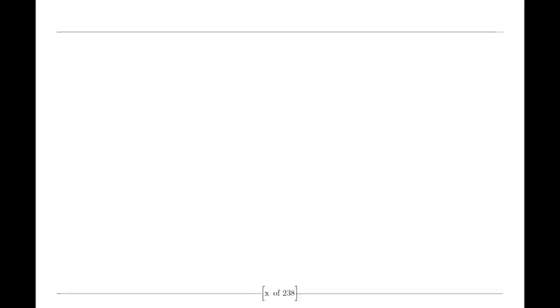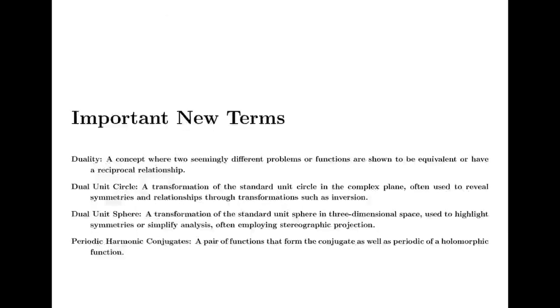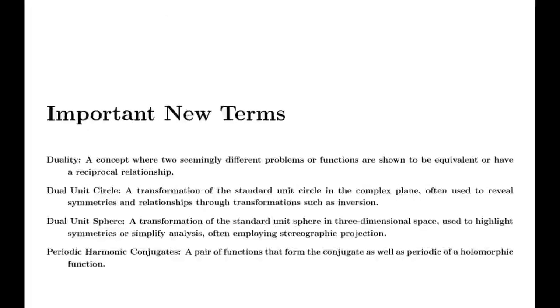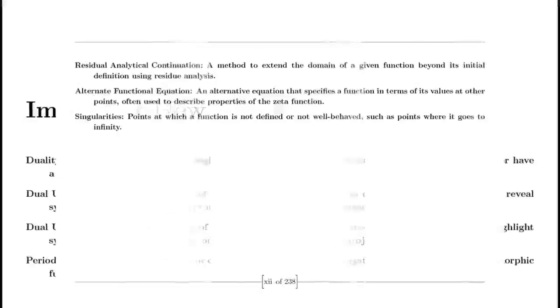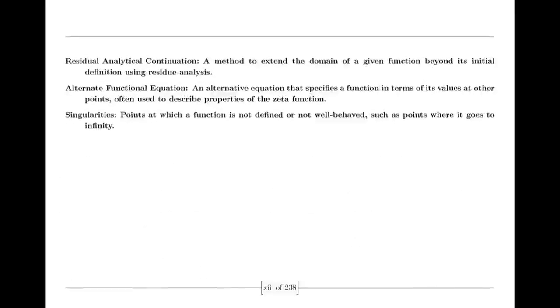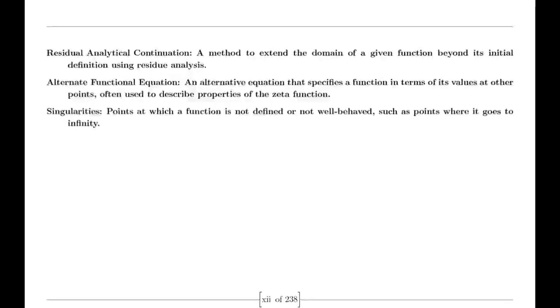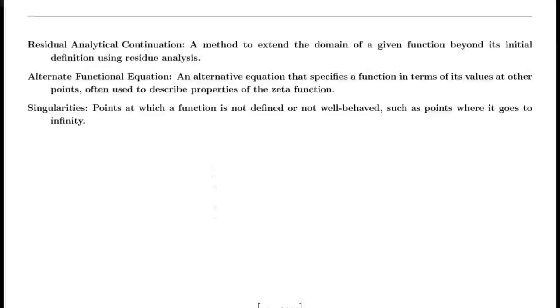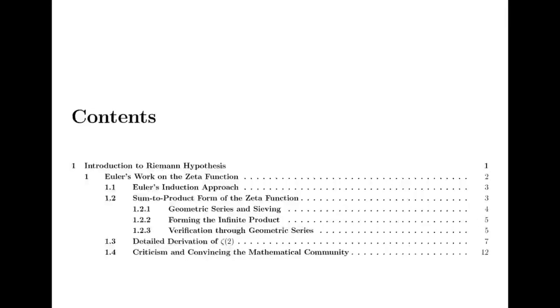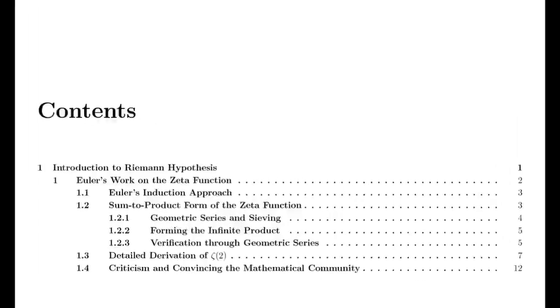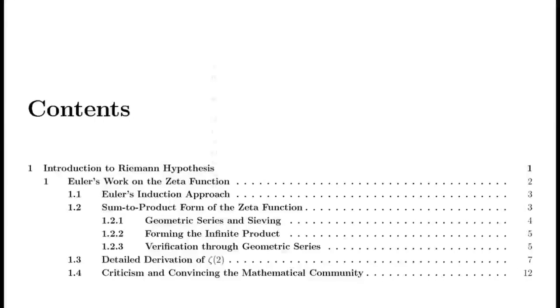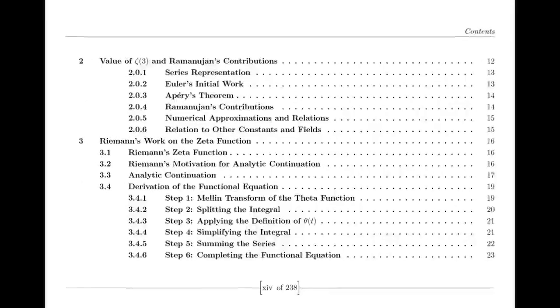Riemann's Analytical Machinery. Moving to the 19th century, we encounter Bernhard Riemann, who expanded our understanding of complex functions. Riemann introduced the concept of analytic continuation, which allowed for the extension of functions beyond their initial domains. He extended the Riemann zeta function — initially defined only for complex numbers with real parts greater than 1 — to the entire complex plane except for s=1, where it has a simple pole. This was a crucial advancement in complex analysis.